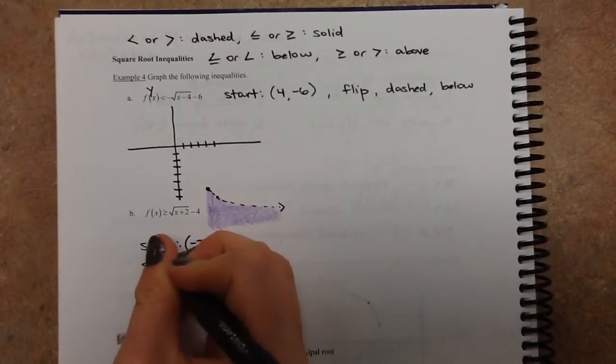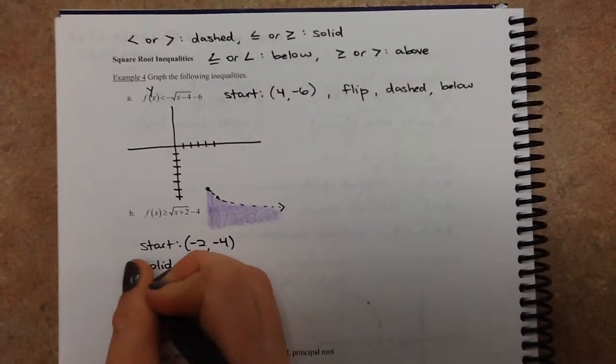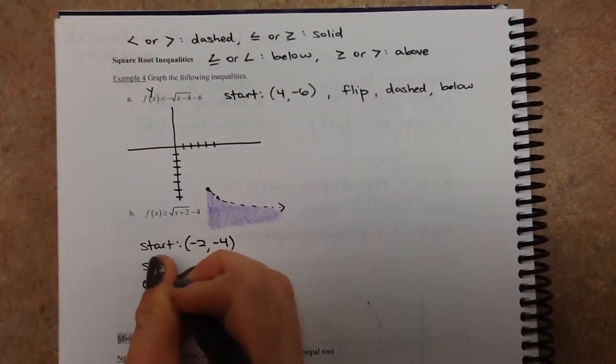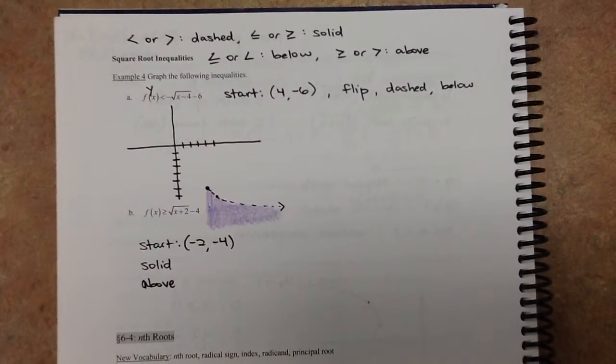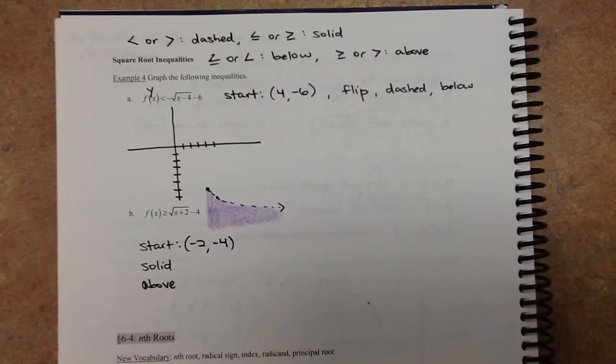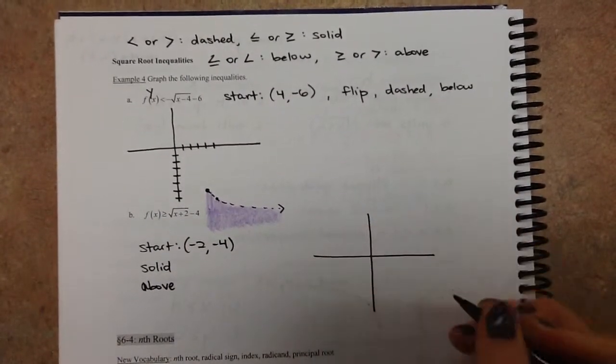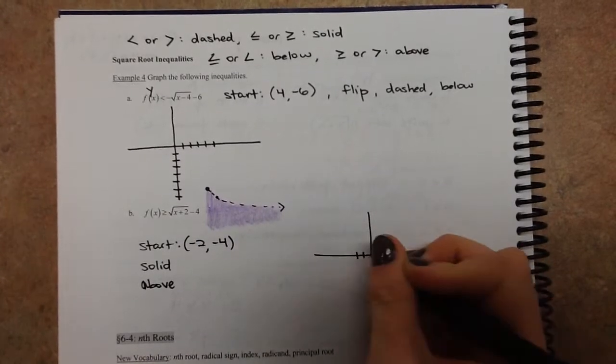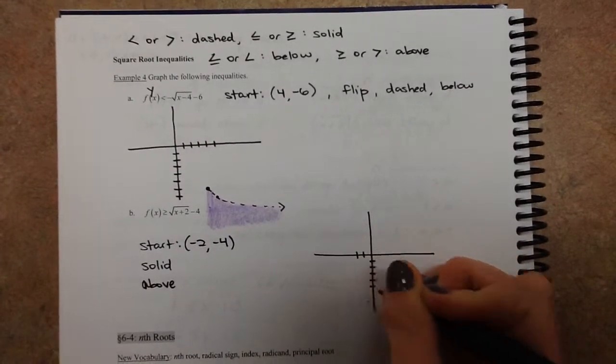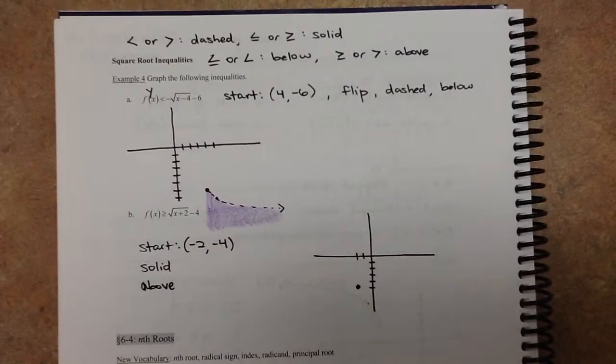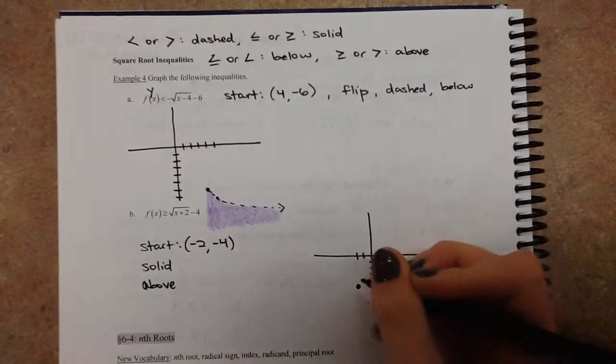And remember when you shade above, you're only shading within the domain, just like we did for this one. So we'll set up our starting point here. We go negative 2, negative 4. So we start right there. And then like I said, no stretch, no compression. We can just go up one over one to go to the next point.